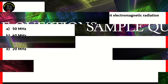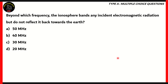Let's start off with our first question of the day. Beyond which frequency does the ionosphere absorb any incident electromagnetic radiation but not reflect it back towards the Earth? Is it 50 MHz, 40 MHz, 30 MHz, or 20 MHz?